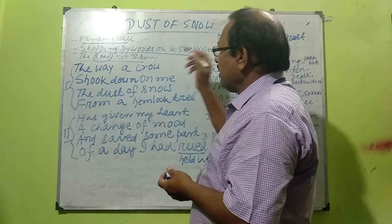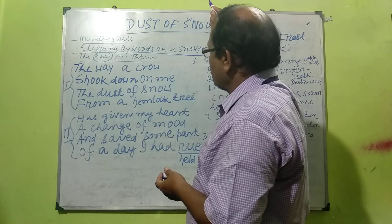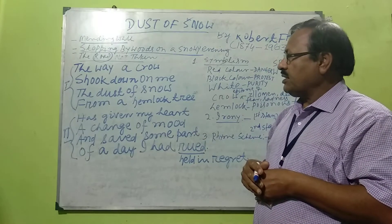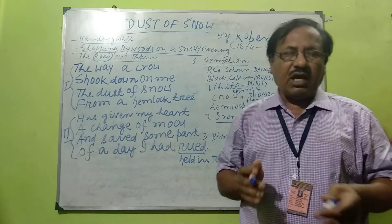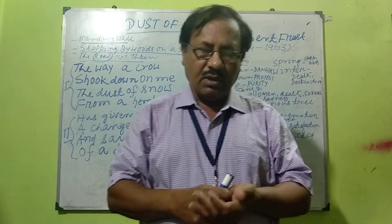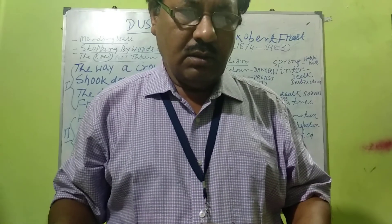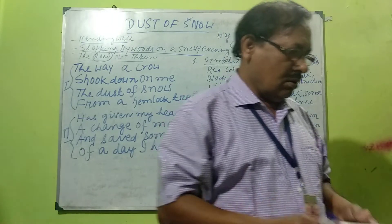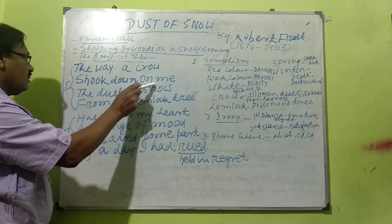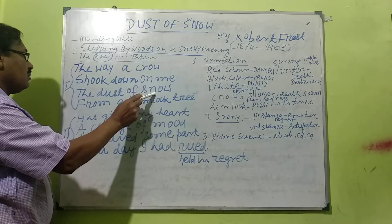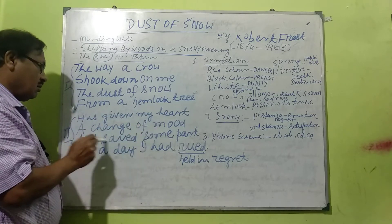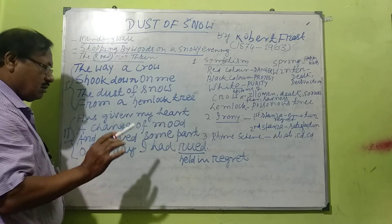So we will read this one — Dust of Snow. The poet is standing under a tree, and there was snowfall. Now listen to the poem. Dust of Snow by Robert Frost: 'The way a crow shook down on me the dust of snow from a hemlock tree, has given my heart a change of mood, and saved some part of the day I had rued.'